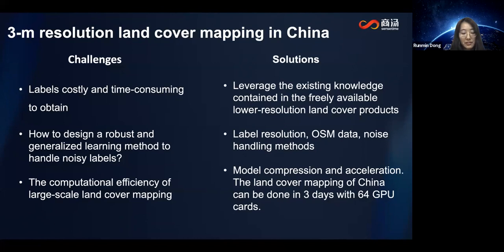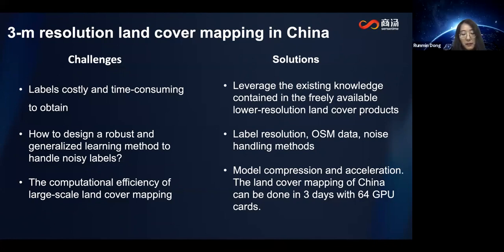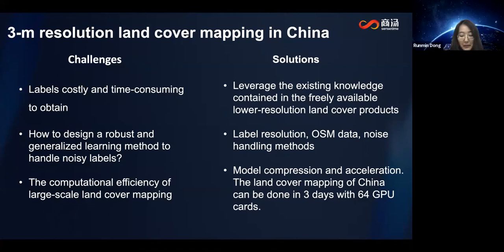In this work, we use a large-scale dataset built by combining the latest 10-meter resolution land cover product with 3-meter resolution satellite images. The dataset provides a real-world challenge for training with noisy labels. To cope with the pixel-level noisy labels, we propose a workflow with a noise correction approach. We correct the noisy labels during the training stage to obtain a relatively clean label set. We also explore model compression and acceleration. As a result, the land cover mapping of China can be done in 3 days with 64 GPU cards.